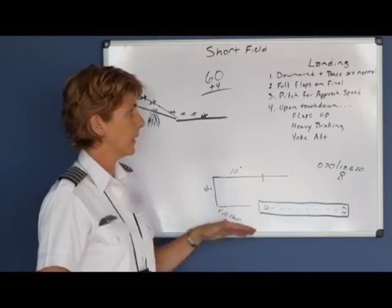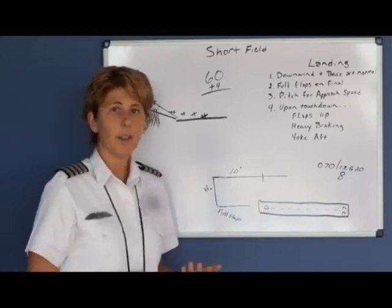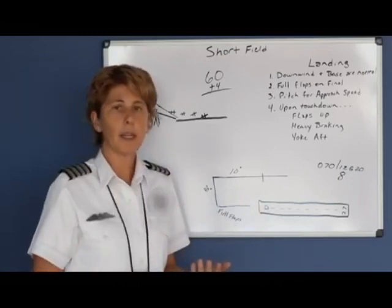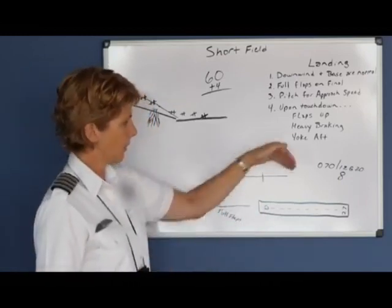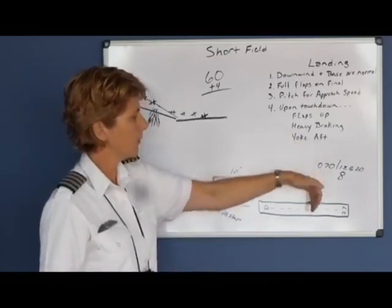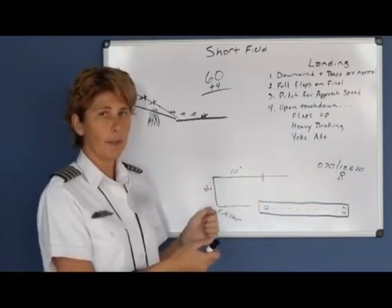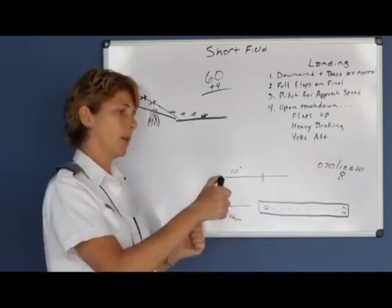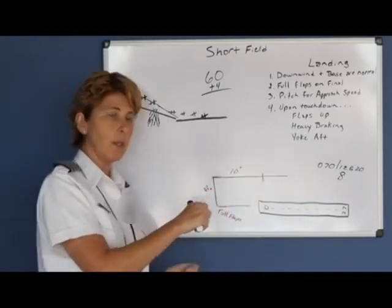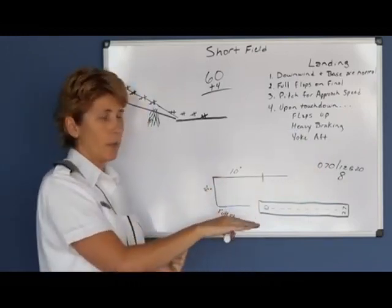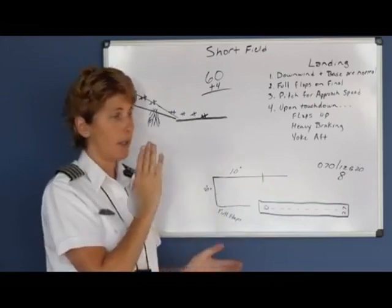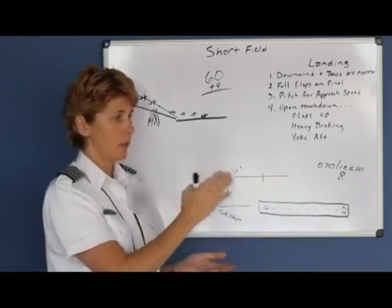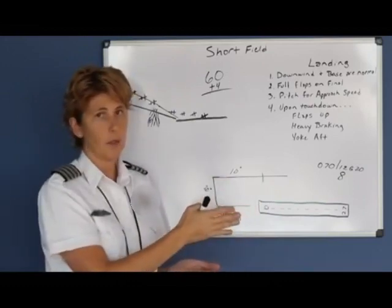On your landing, don't forget your crosswind technique. If the winds were, in this example, out of the left, then we would have to land with ailerons into the wind and a little bit of right rudder to maintain our centerline and longitudinal axis in the direction of travel.